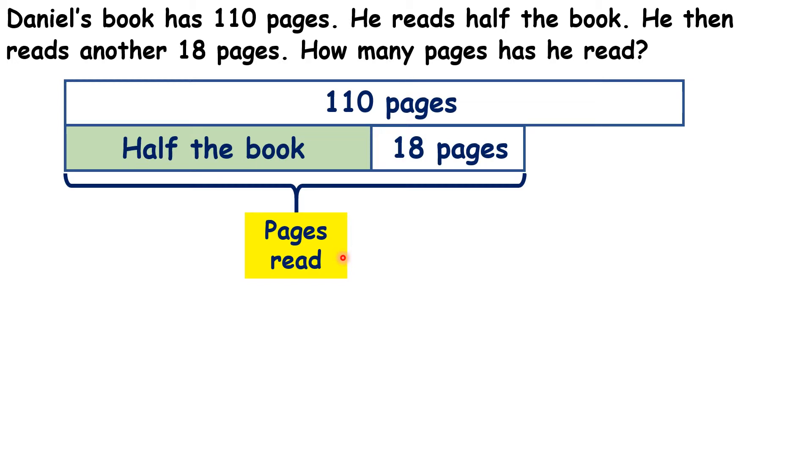So what do we need to work out first? We need to work out how many pages are in half of the book, so we can find half by dividing the total by 2.